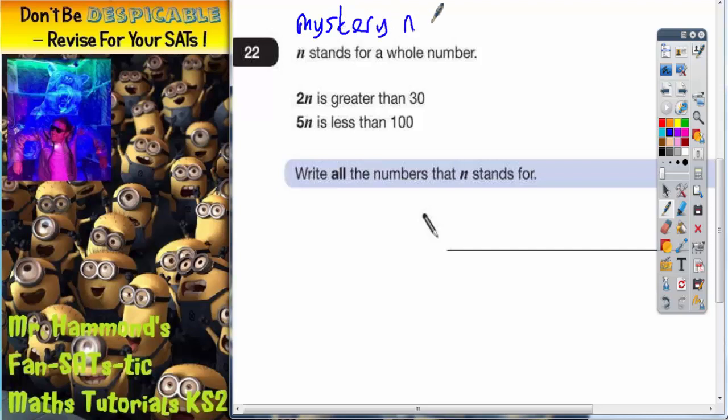It then says 2N is greater than 30, and all that means is 2 lots of this mystery number is bigger than 30. And 5 lots of the mystery number, 5N, is less than 100.